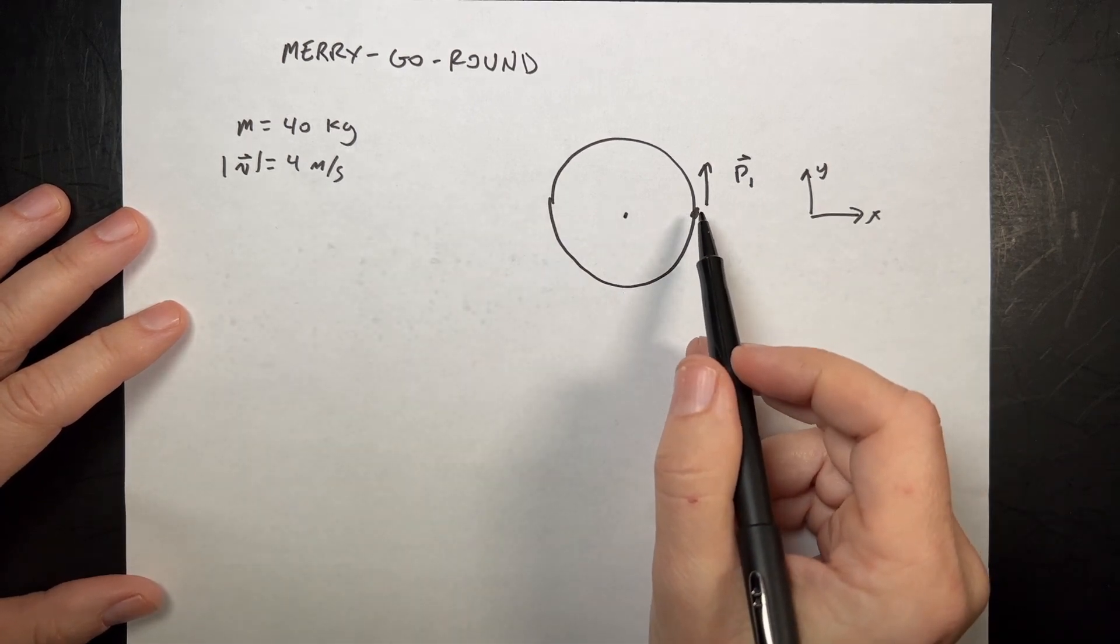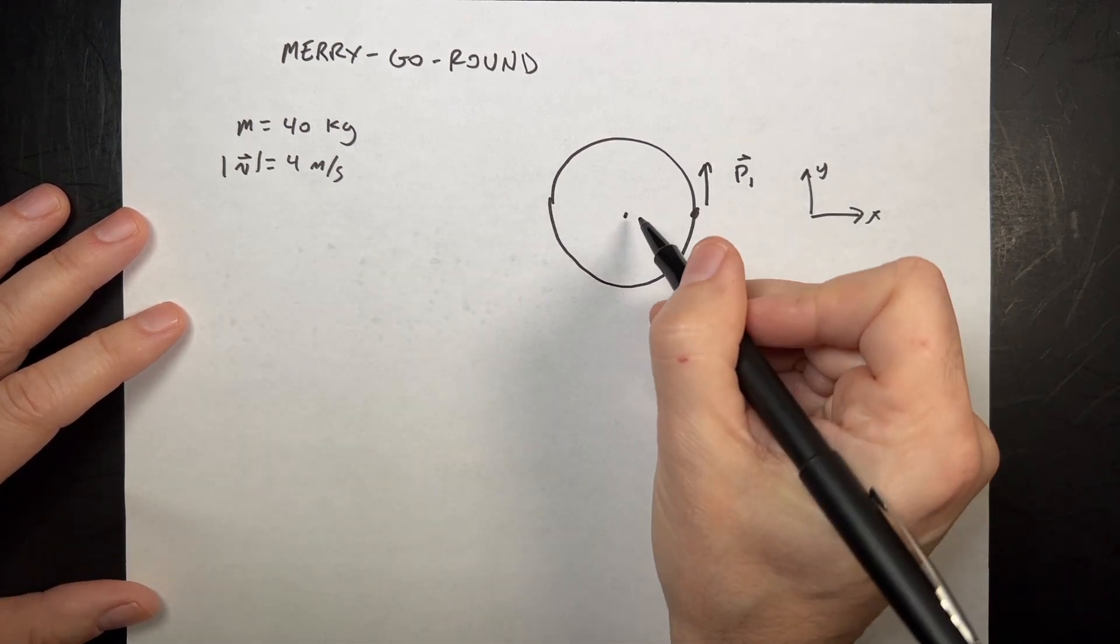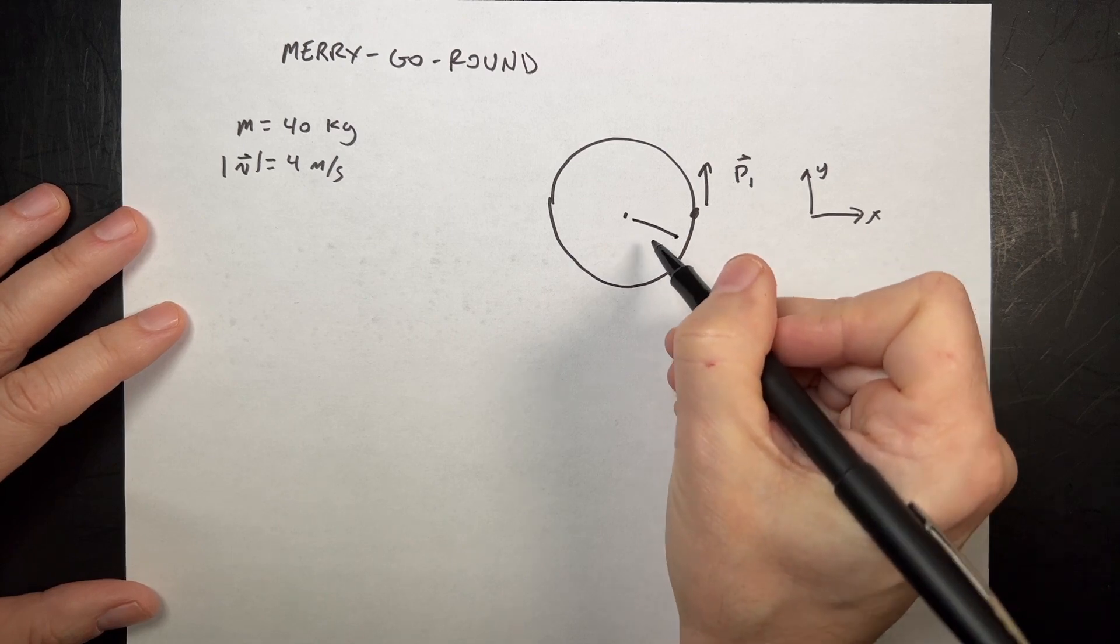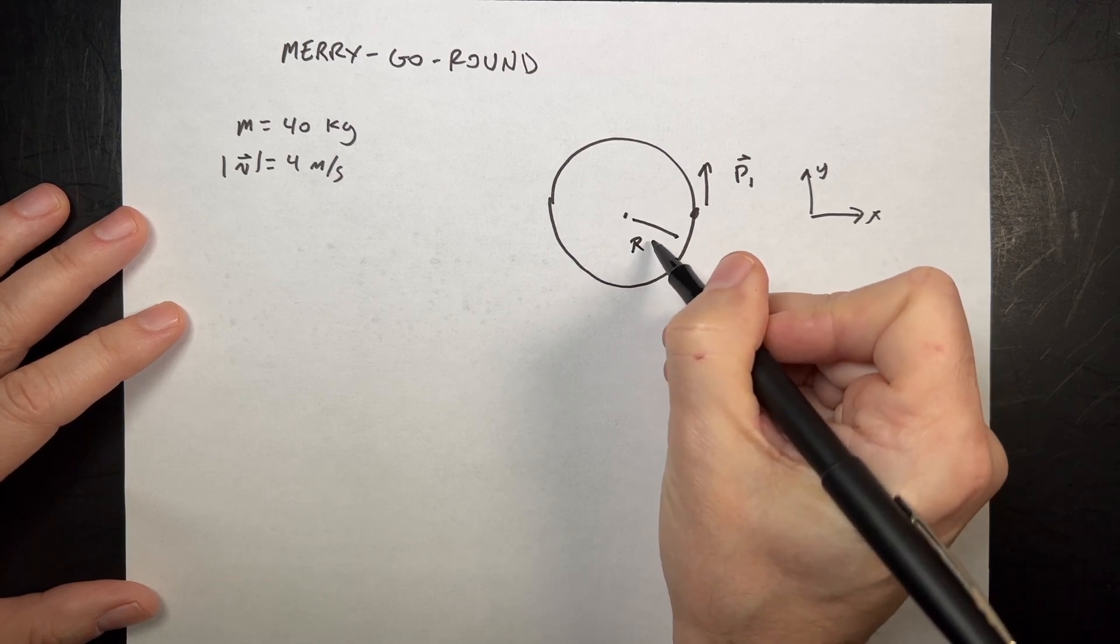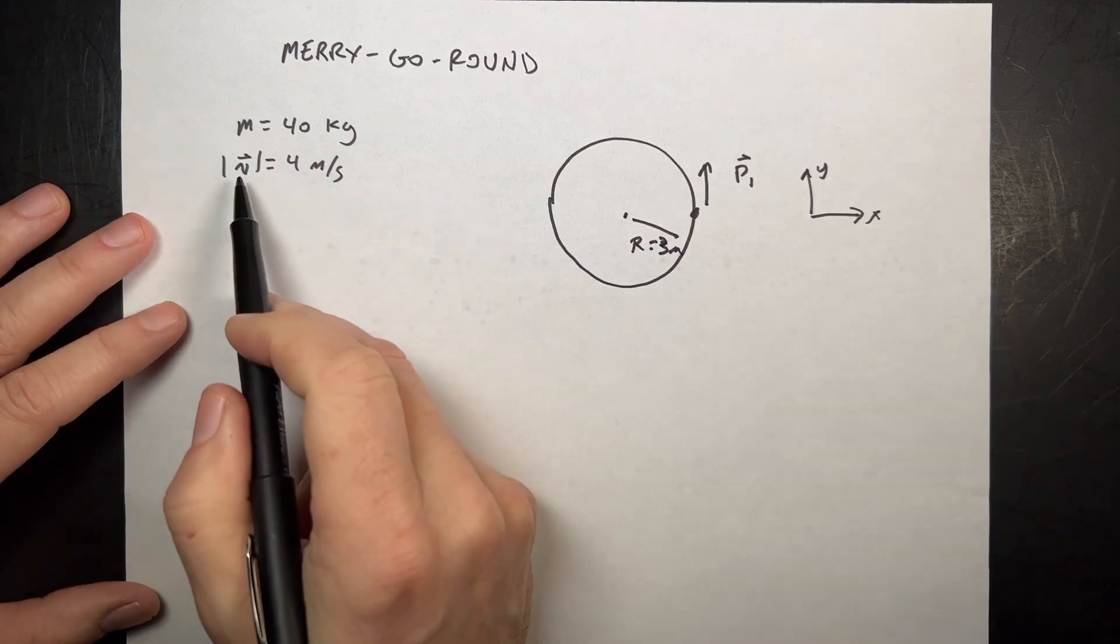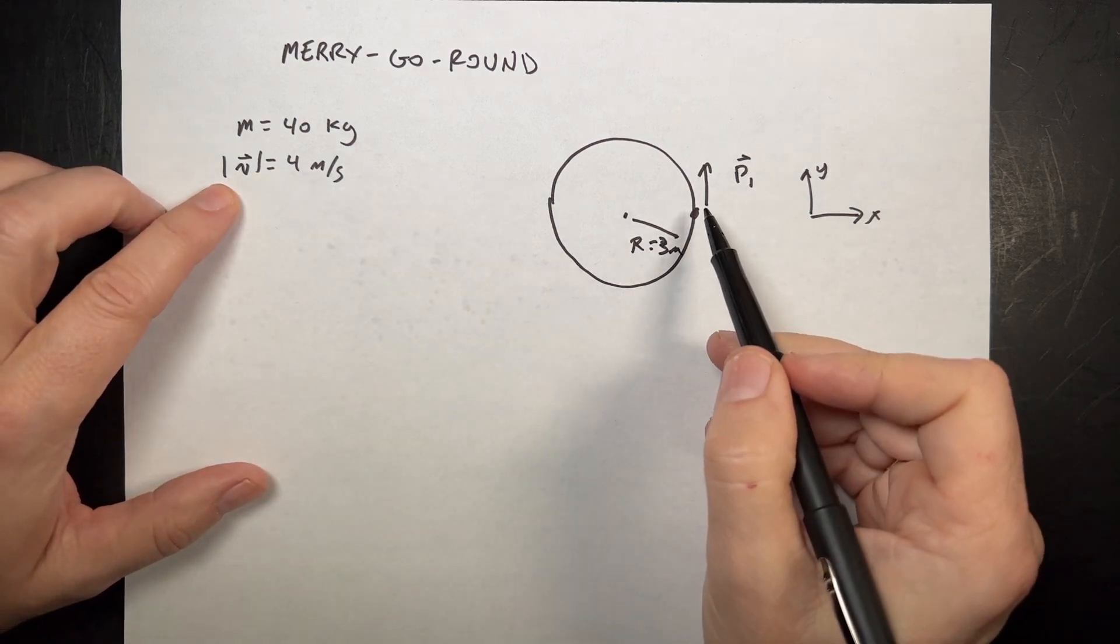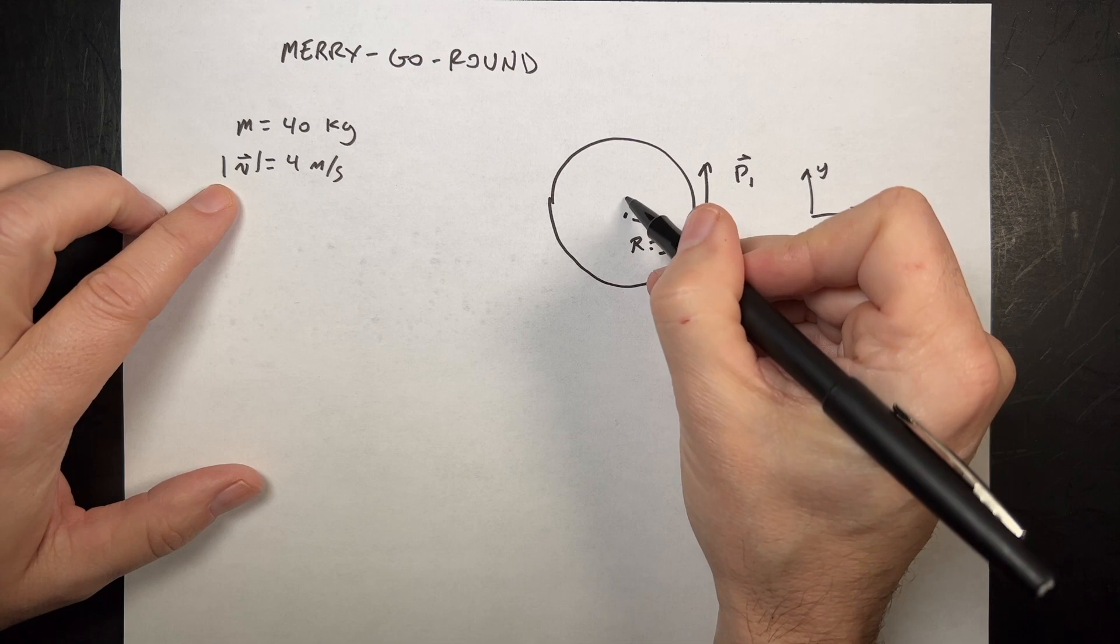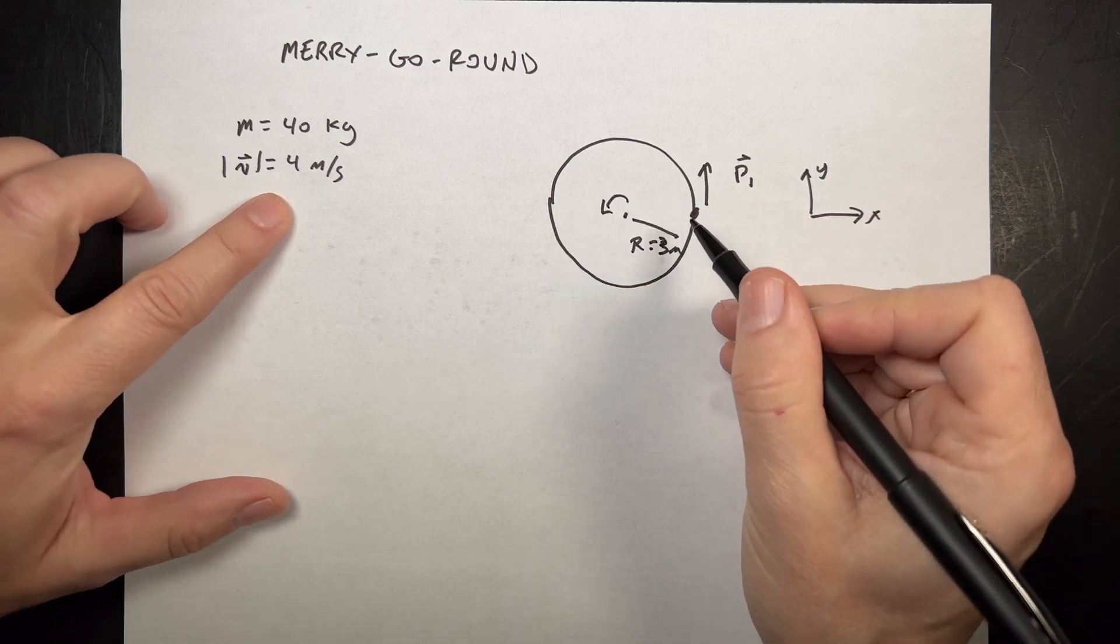Let's say we have a child on the edge of the merry-go-round. We can give this a radius just for fun. So let's say this is 3 meters, the radius is 3. And the child has a velocity because of the rotation of the merry-go-round that's going this way of 4 meters per second.